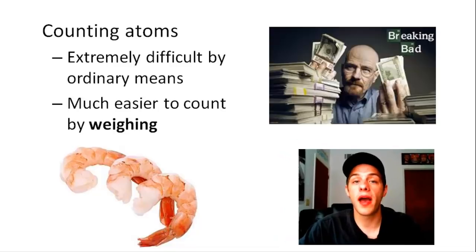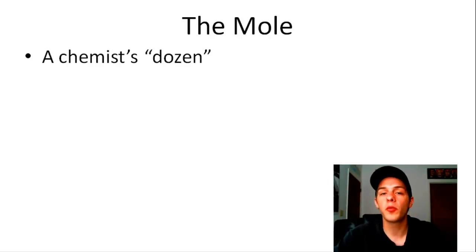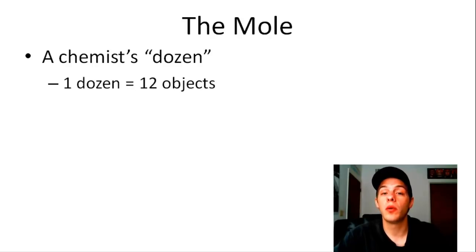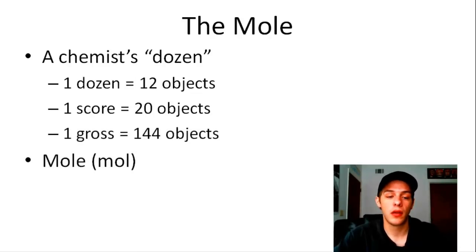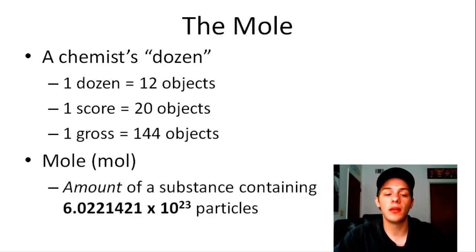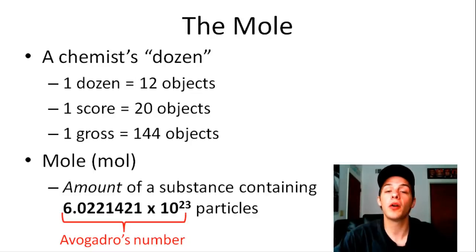One of the main tools that helps chemists count atoms is the mole. The mole is often referred to as the chemist's dozen — it's basically just a large number. Whenever we have large numbers of things, we often use large units just to keep our numbers nice and small. The dozen corresponds to 12 objects, the score to 20 objects, the gross to 144 objects. The mole is defined as the amount of a substance that contains 6.0221421 times 10 to the 23rd particles. This number is called Avogadro's number. So if you have a mole of anything, you have Avogadro's number of that thing — a mole of pancakes, a mole of marbles, and so on.